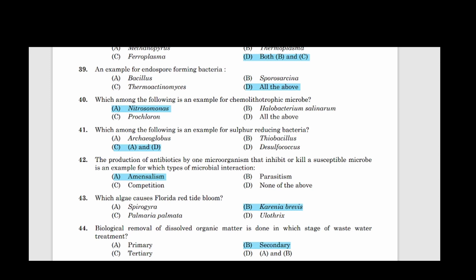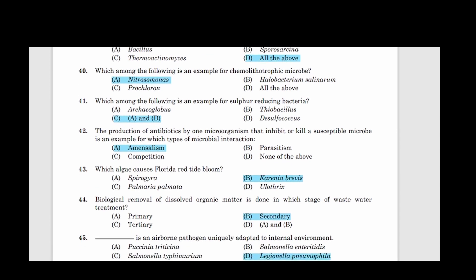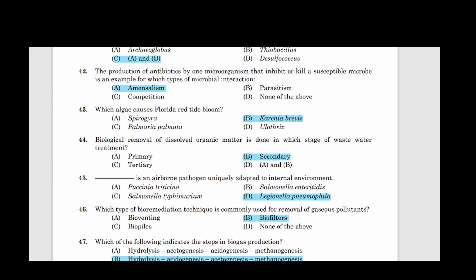Forty-second question: The production of antibiotics by one microorganism that inhibit or kill a susceptible microbe is an example for which type of microbial interaction? Answer option A, Amensalism. Forty-three: Which algae causes Florida red tide bloom? Answer option B, Karenia brevis. Forty-four: Biological removal of dissolved organic matter is done in which stage of wastewater treatment? Correct answer option B, Secondary.